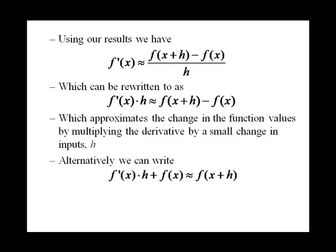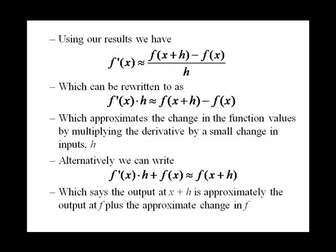Another way we can think about this is that f prime of x times h plus f of x will approximate f of x plus h. That next output value means the output value at x plus h is approximately the output value at f plus the approximate change in f.